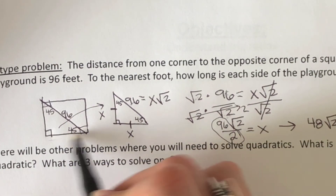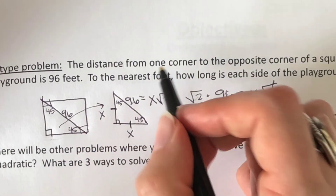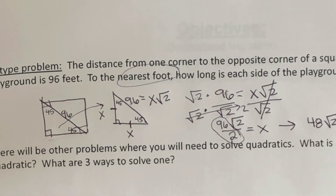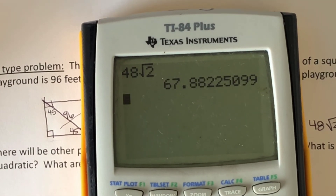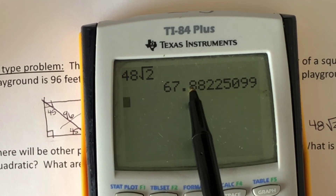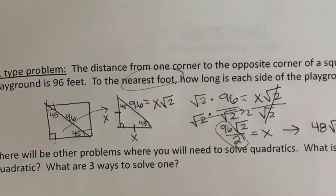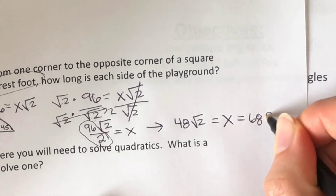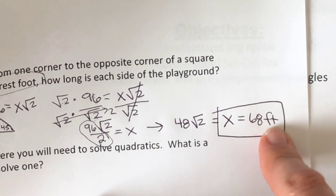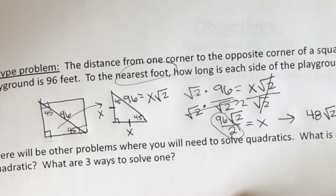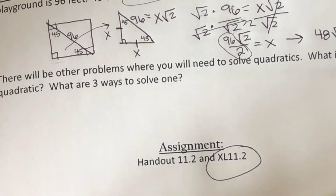The sides of the playground are each 48 square root of 2. They said to round to the nearest foot, so put it into a calculator: 48 times the square root of 2 is approximately 68 feet. Be careful in story problems — they might have you get the decimal and round, because in real life we wouldn't say 'the park is 48 square roots of 2 feet long.' Also be careful when you get square roots in the denominator — you have to rationalize them. Your homework is Math Excel 11.2.